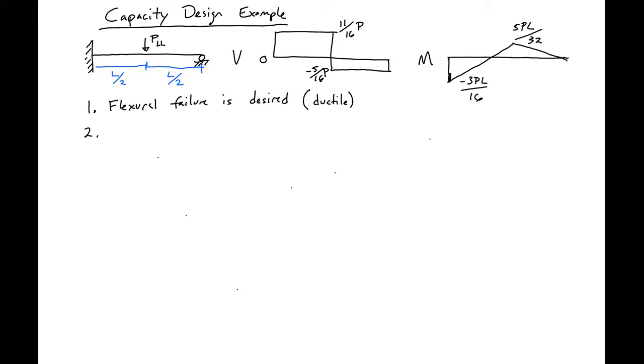The second step is to provide the sufficient strength for that mode of failure. In our case we want to design our section such that we have phi Mn greater than Mu. Our Mu from above, you can see our Mu is equal to 3PL over 16.